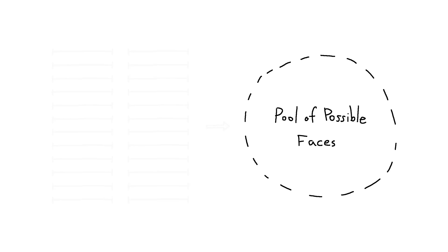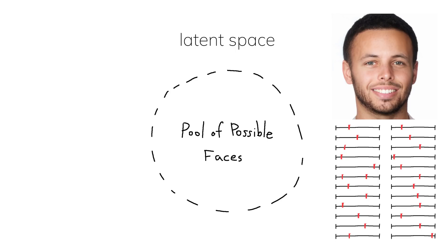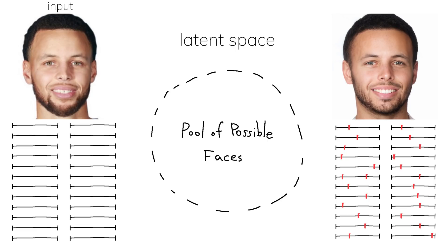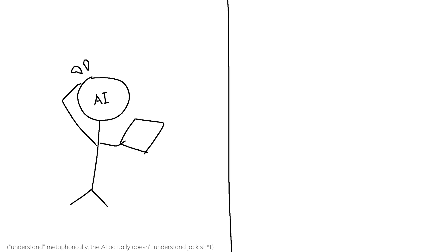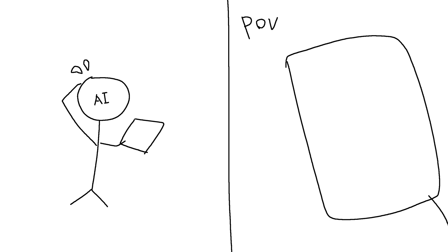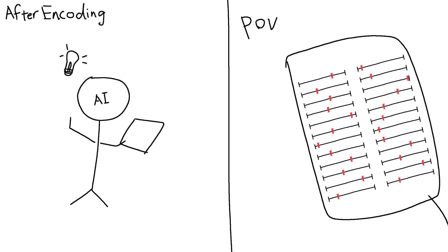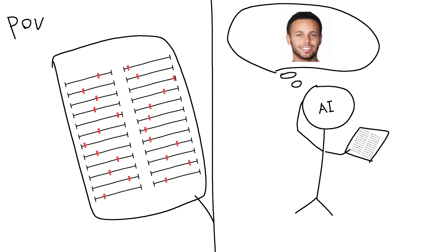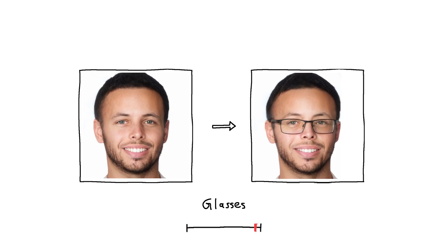These limited parameters can only produce a limited amount of faces. These finite choices then form something called the latent space, so a specific set of parameters representing a face you input is called a latent representation — the face is encoded into a latent representation. To put it simply, the AI doesn't understand the encoded faces; it's like a flat sheet of paper presented to them. So this encoding process is very important as it not only lets the AI grasp the face and its details, but will also enable us to perform facial manipulation on the facial attributes.